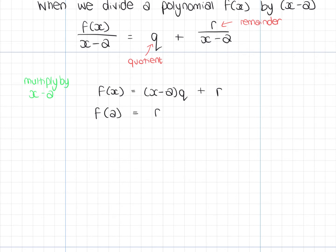So, that side simply becomes r. So, that gives us the remainder. So, what we're saying is, if we're dividing a polynomial by x minus a, if I put a into the polynomial in place of x, the answer I get is simply the remainder.